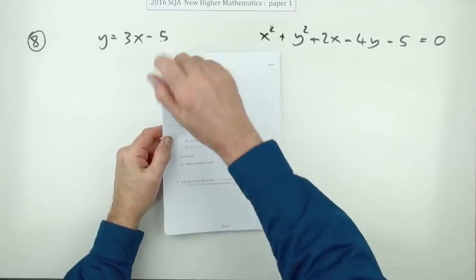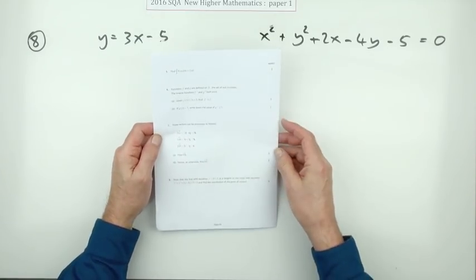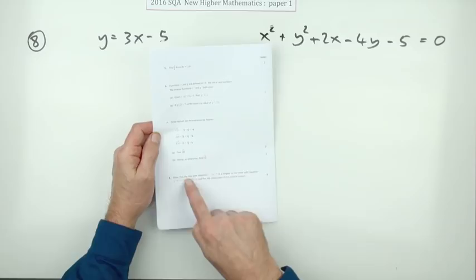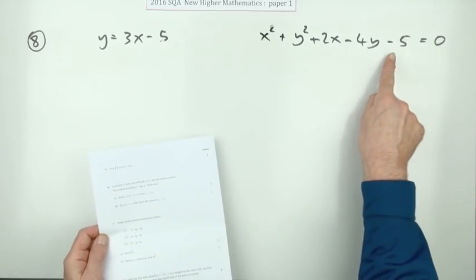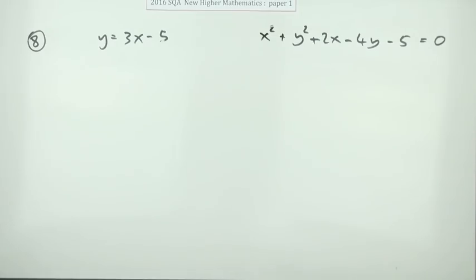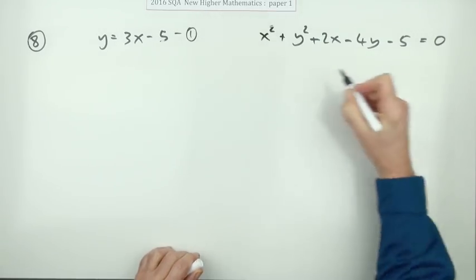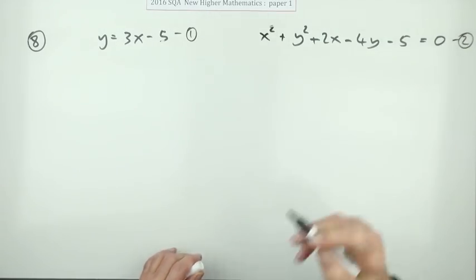And so number 8 then from the 2016 Higher Maths Paper 1. Here we go, five marks, show that a line is a tangent to a circle, show that this line is a tangent to that circle. I'll give them names first of all, so I'll call that equation 1 and I'll call that equation 2.